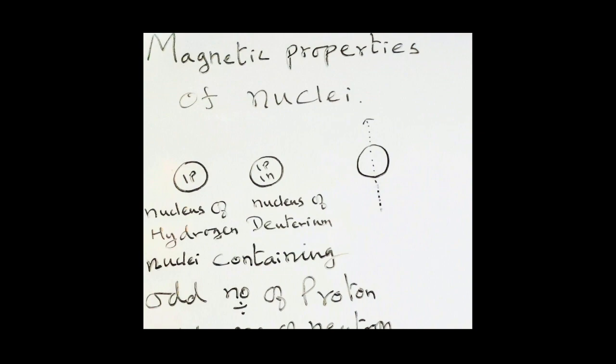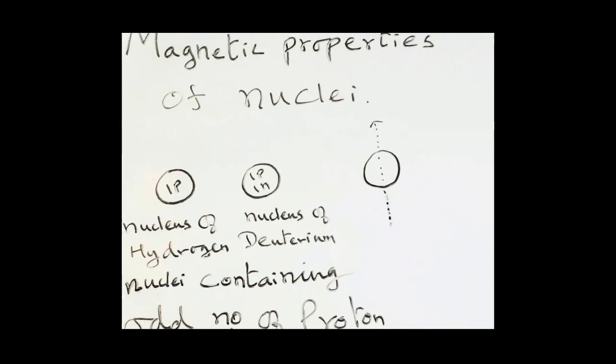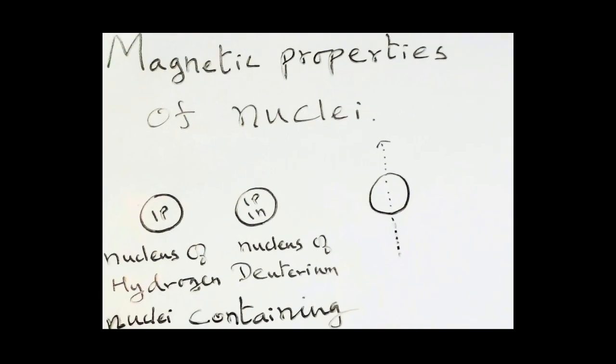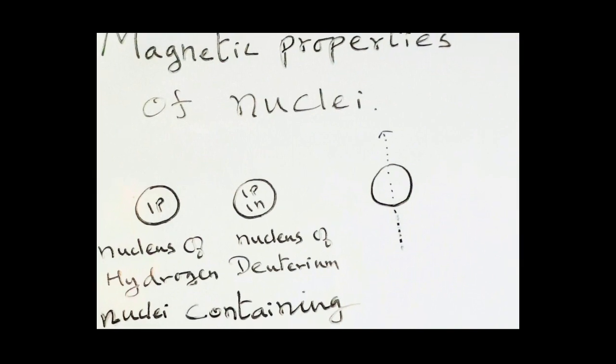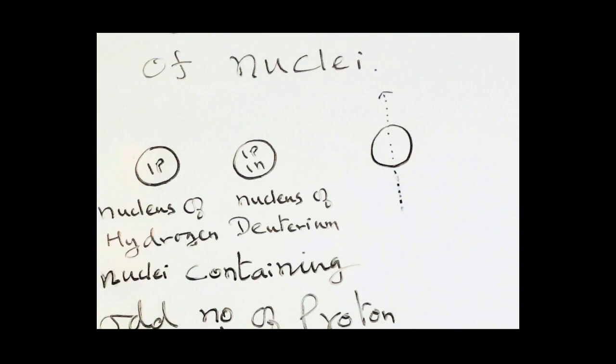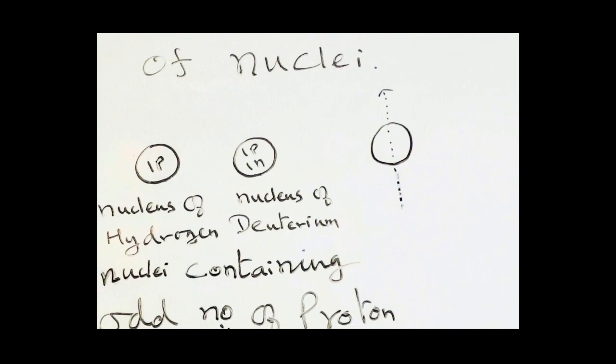Now let us see what are those special nuclei. The special nuclei are those which have magnetic properties. Let us see how the magnetic properties of the nuclei arise. Consider a simple nucleus of hydrogen atom. The nucleus of hydrogen atom has only one proton and no neutron. In NMR spectroscopy we need not worry about the number of electrons.